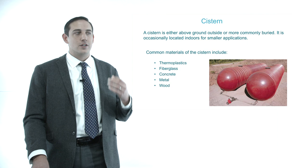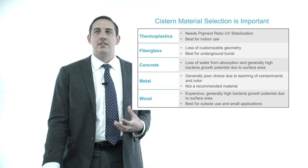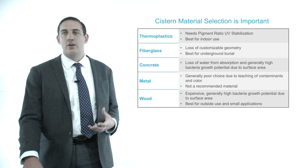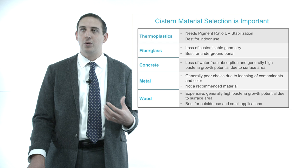Most cisterns tend to be thermoplastic or fiberglass, concrete, metal, or similar materials and are generally very large tanks. When talking about residential rainwater reclamation, people look at 50-gallon rain barrels, but these are not really applicable in commercial rainwater applications. There are benefits and disadvantages to different cistern materials. Thermoplastics are best for indoor use, but all these tanks regardless need to be pigmented. If a tank is not going to be buried, it needs to be pigmented to prevent bacteria buildup from natural sunlight within the storage tank.